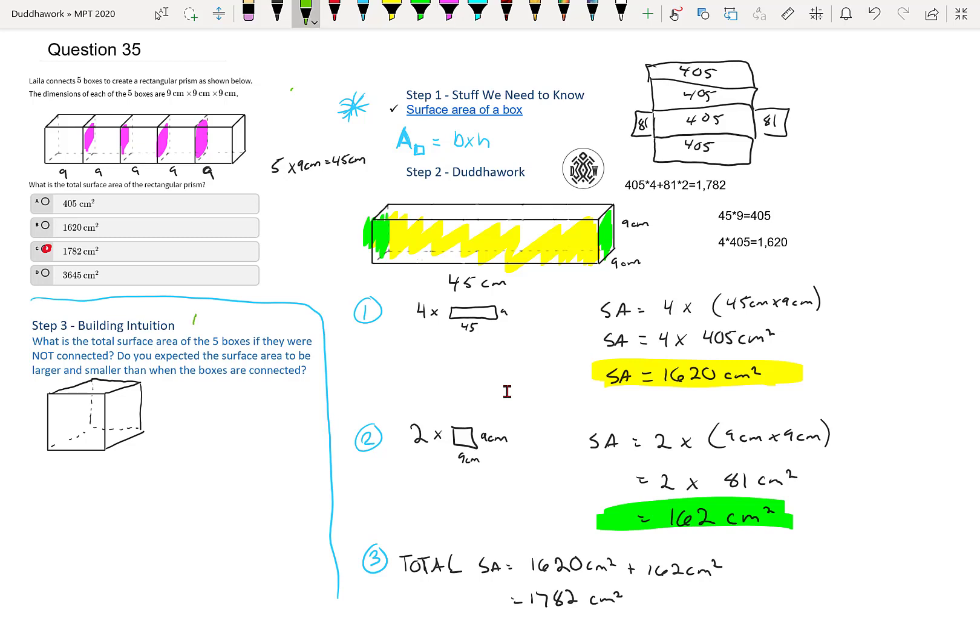It would be 1782 minus 4 times 81. So maybe I'll type it in, and then we can check our answer at the end. So I'll just write it here. 1782. And then if I subtract the four purple parts, and each part has 9 times 9 area, so that's where it comes from, we should get the final answer. But, of the prism, but let's find the, and sorry, it shouldn't be the 1782, it should be the total unconnected. So let's do it after. And that should be 1782.